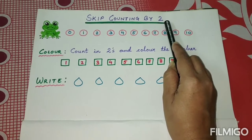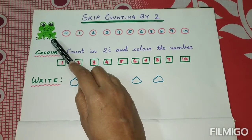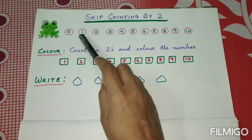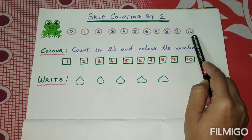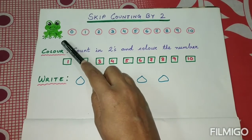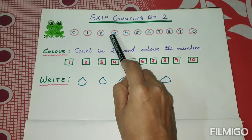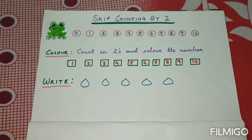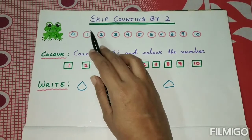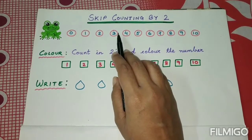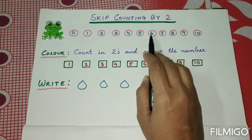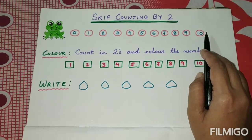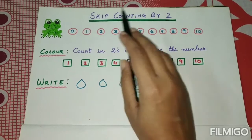Here you can see a frog, and I have written the numbers from zero to ten. Let us help this frog skip and go by counting two. The numbers are zero, one, two, three, four, five, six, seven, eight, nine, and ten. Skip counting by two means we will skip one number and jump to the next number.